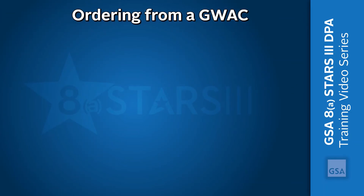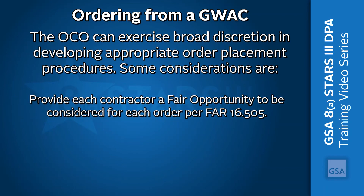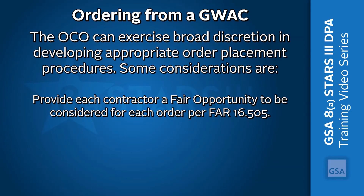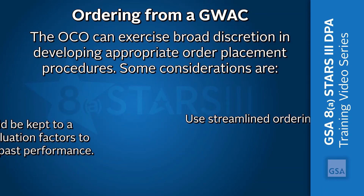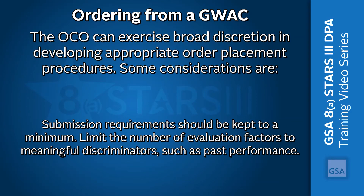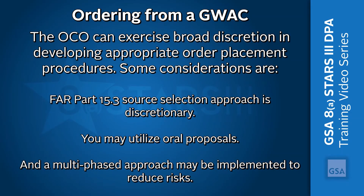When ordering from a GWAC, the OCO can exercise broad discretion in developing appropriate order placement procedures. Some considerations are: provide each contractor a fair opportunity to be considered for each order per FAR 16.505. 8A STARS III allows for sole source orders at or below the 8A competitive threshold, including options. Use streamlined ordering methods per FAR 16.505. Submission requirements should be kept to a minimum. Limit the number of evaluation factors to meaningful discriminators, such as past performance. Remember, the only evaluation factor that is required is price. List your evaluation criteria and their relative order of importance. FAR 15.3 source selection approach is discretionary. You may utilize oral proposals, and a multi-phased approach may be implemented to reduce risks.